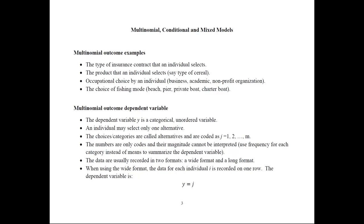Here I would like to give you a few examples of multinomial outcome variables. The first one is the type of insurance contract that an individual selects — it could be a contract with various specifications. It could be different products an individual selects, like type of cereal or meat. It could be an occupational choice: working for a business, academic, or non-profit organization. The example we will consider here is the choice of a fishing mode: beach, pier, private boat, or charter boat.